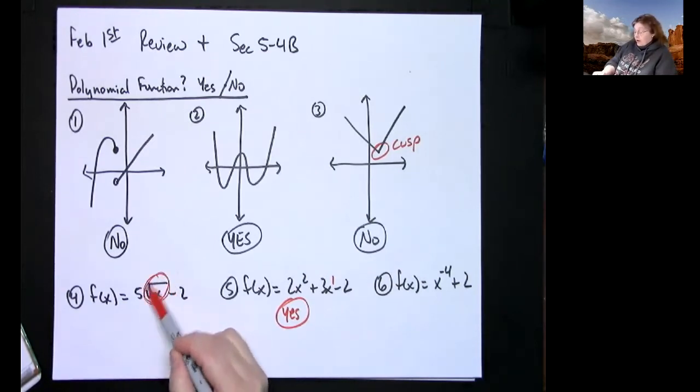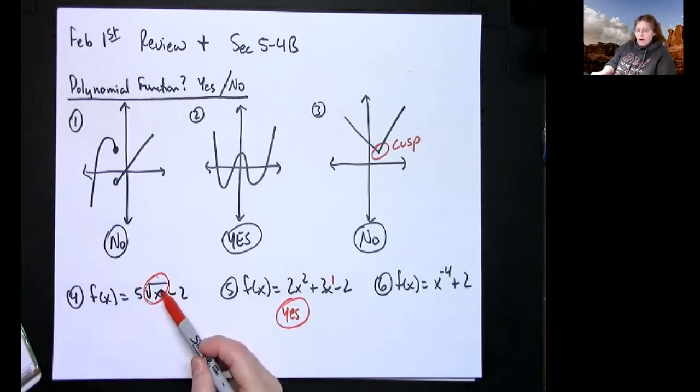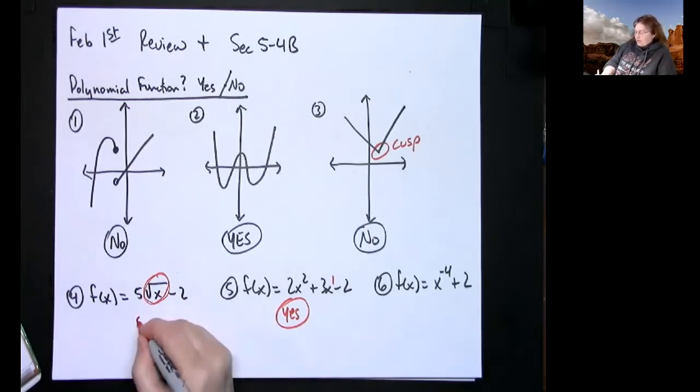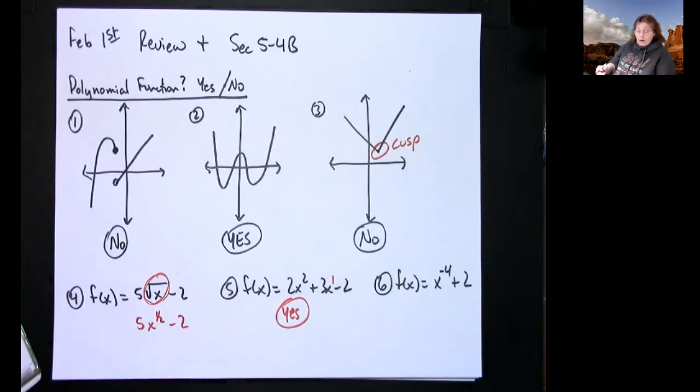But you're going to look right here at this function, and you're going to see, oh well that's square root of x. And if I rewrite that as 5x^(1/2), going from that radical form to exponential form, then that's no longer a whole number, it's not a positive integer. So then no, this is not a polynomial function.